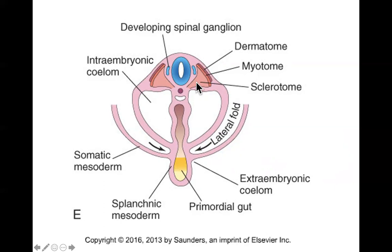The head and face form a little differently — they form from mesenchyme that differentiates from neural crest cells in the cranial region; we'll talk about that in a different chapter. The myotome is destined to become the muscles and related structures, and the dermatome is going to become the dermis of the skin — not the epidermis, but the deeper layer of the skin made mostly of fibrous and loose connective tissue.